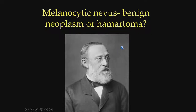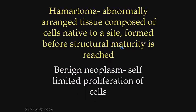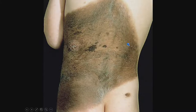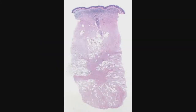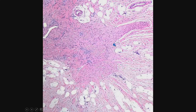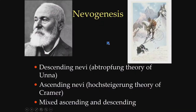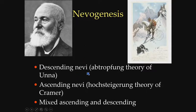This is Paul Gerson Una, who did a lot of the early work on nevi and regarded them as hematomas — probably because congenital nevi seemed to be defects in embryonic organization. Una thought that at least some melanocytic nevi were hamartomatous. He then looked at acquired lesions and decided they came from the epidermis, from epidermal melanocytes that dropped into the dermis. This is called the descending nevus, or Abtrafung theory of Una.